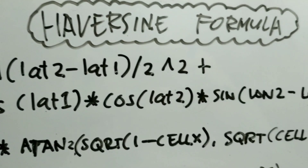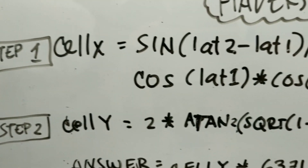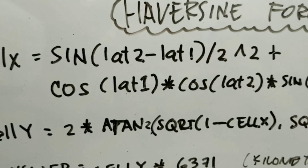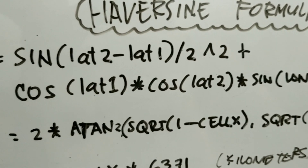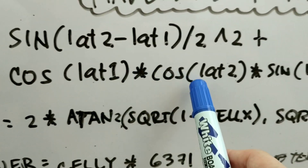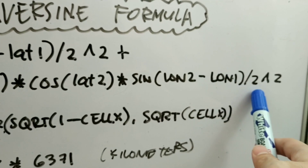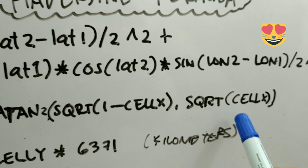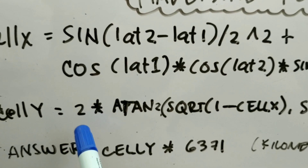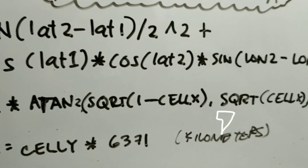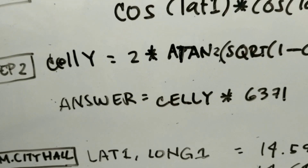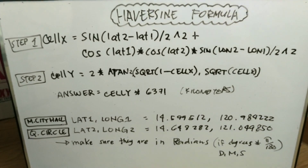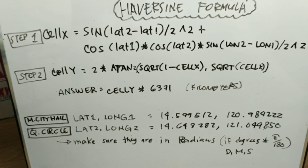It's very simple. You just need two steps in Excel. First, get cell X, where cell X is the sine of (latitude 2 minus latitude 1) over 2, squared, plus cosine of lat 1 times cosine of lat 2 times sine of (longitude 2 minus longitude 1) divided by 2, squared. Then, using that cell X, get 2 times arctan2 of the square root of cell X and the square root of (1 minus cell X). That gives you cell Y, which you multiply by 6,371 to get kilometers. That's how simple it is to use the Haversine Formula to get the distance between two lat-long pairs.